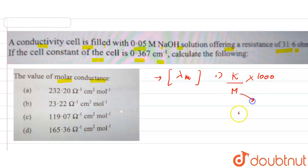Molarity is 0.05 molar. So first of all, we need to find the value of specific conductance, that is kappa, and its formula is cell constant divided by the resistance.